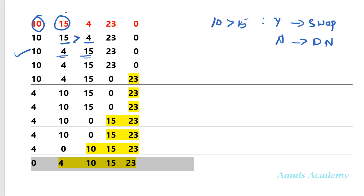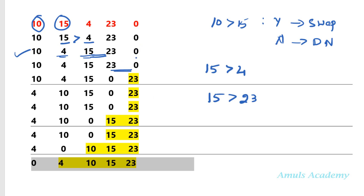We are comparing these different values again and again: first 10 and 15, next 15 and 4, next 15 and 23, then 23 and 0. We want to compare the list of numbers again and again, so for that in my program I will take a for loop.